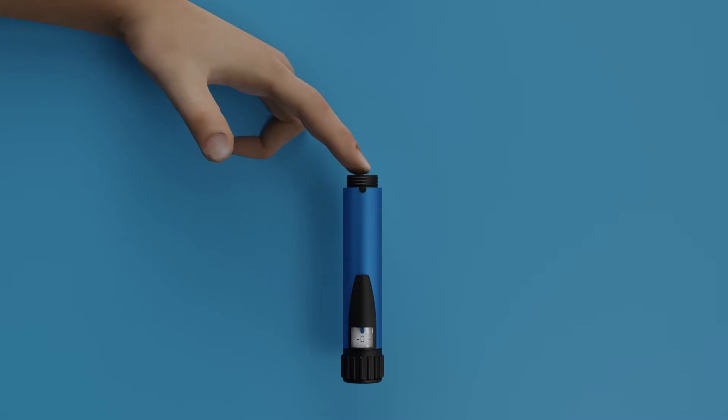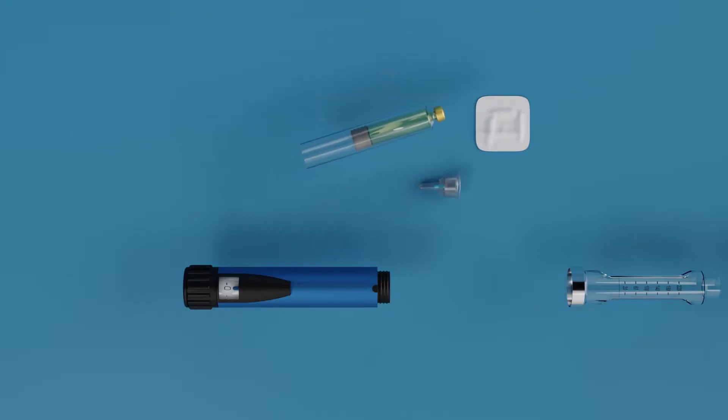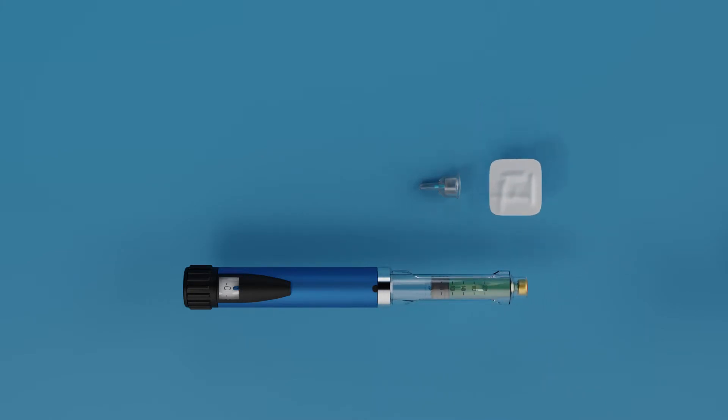Load the cartridge with the metal cap before the further procedure. Screw the cartridge holder and the pen body firmly together. Clean the cartridge holder head with the alcohol swab.